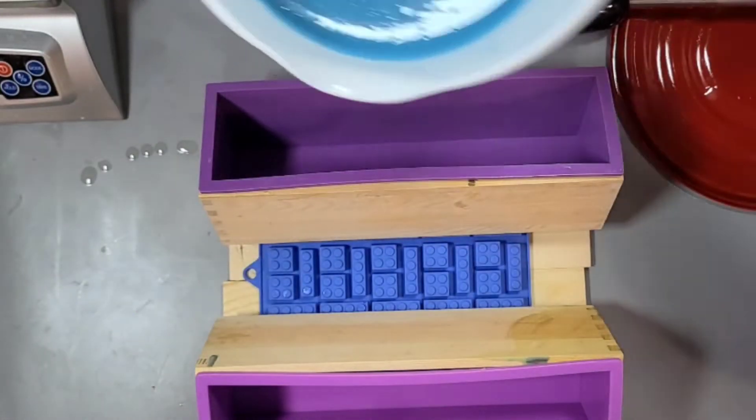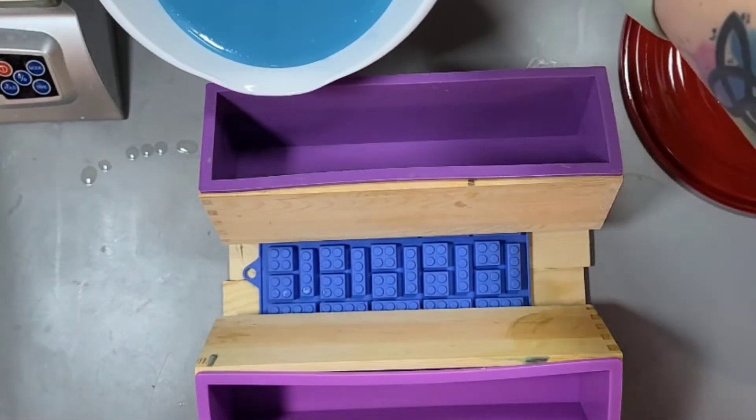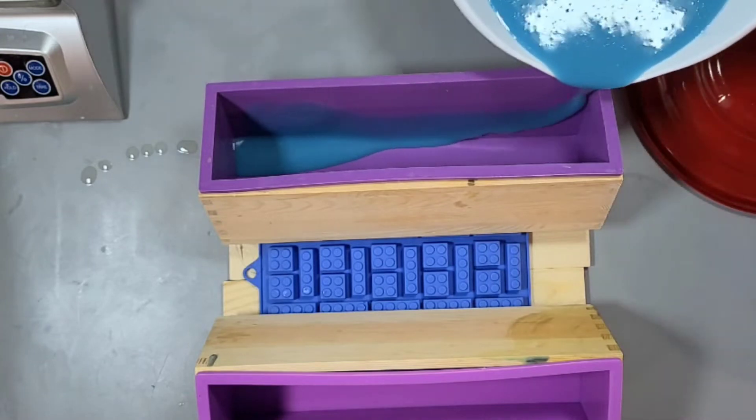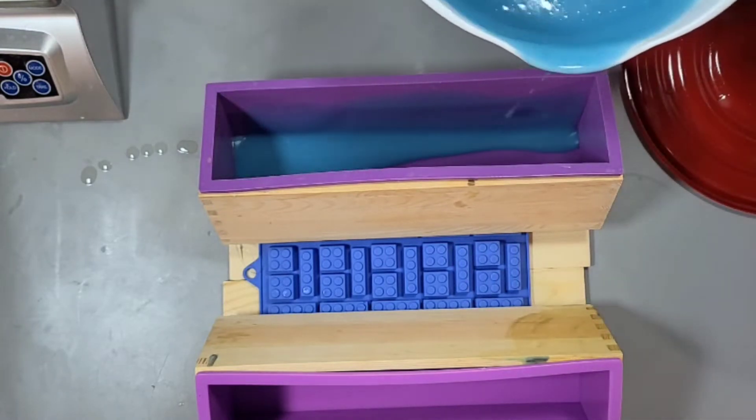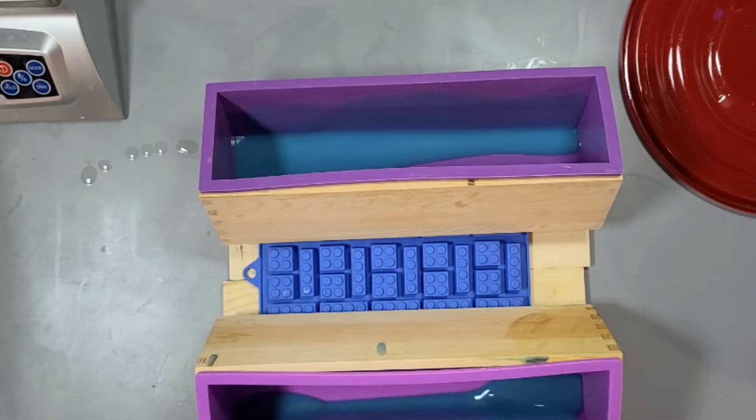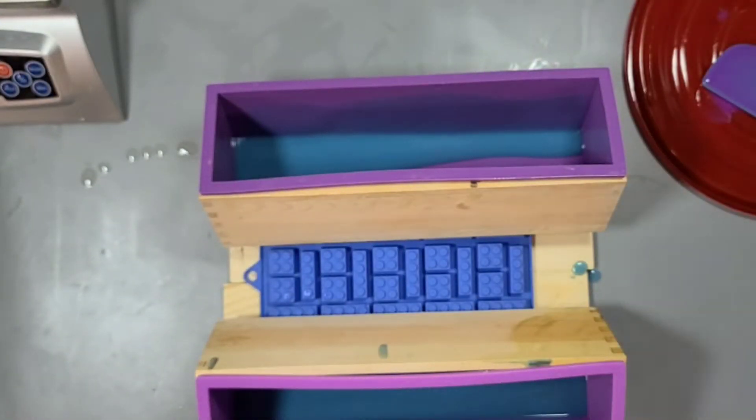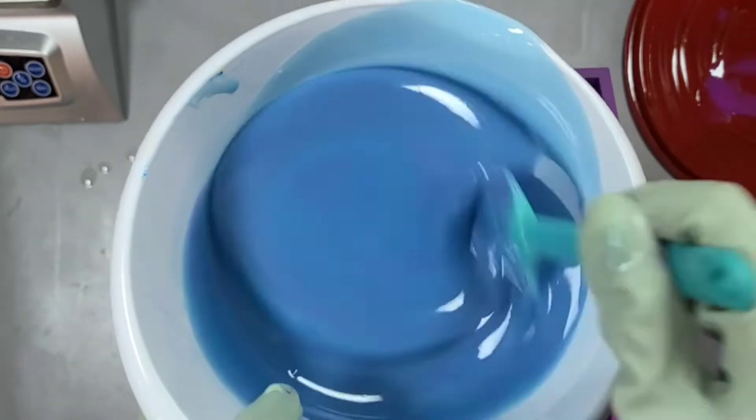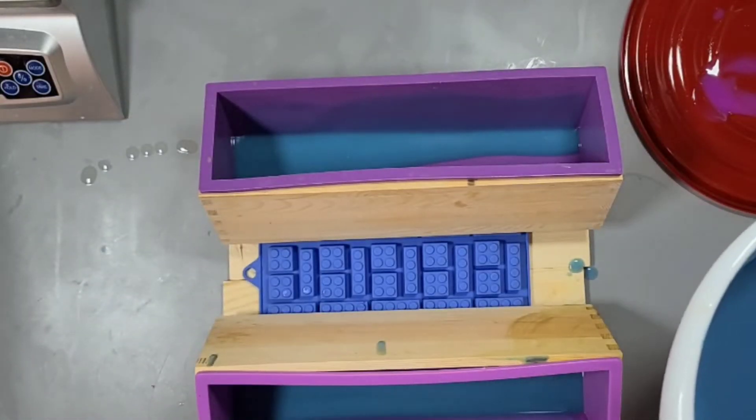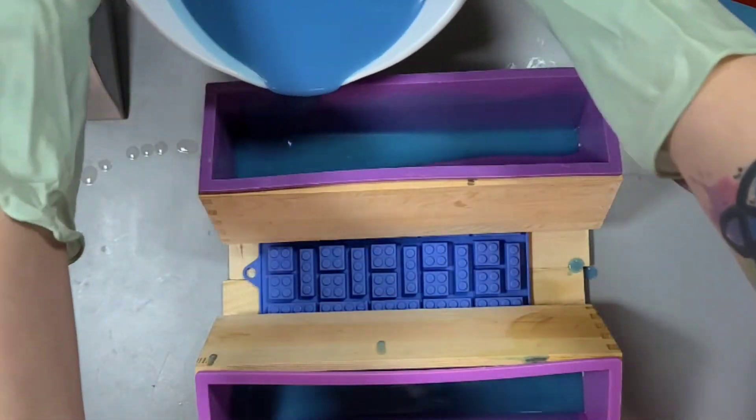Okay, so for my ombre, I'm going to start with the blue. Now looking back, I kind of wish I would have started with the darker color and added in the blue, but that's okay because it still came out really cool. So I'm adding a little bit of blue and with each pour, I'm just going to add a tiny bit of purple and mix it in really well and then pour it on the wall of the mold so it kind of runs down the side.